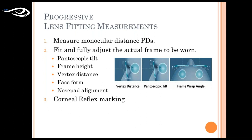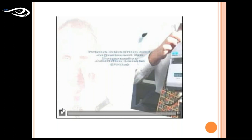The most important measurement is the monocular distance interpupillary distance (IPD), which can be measured with an IPD ruler or pupillometer. Before marking the corneal reflex on the frame you must ensure the frame is properly aligned. Important factors include pantoscopic tilt, frame height, and vertex distance. Let's look at a video which will clearly demonstrate how to take these measurements and adjust the frame properly.